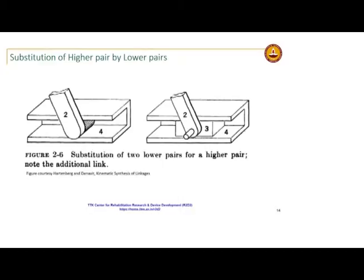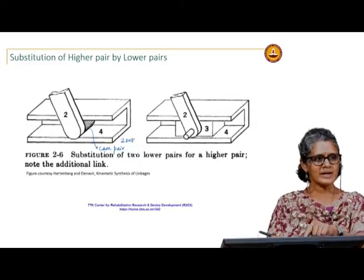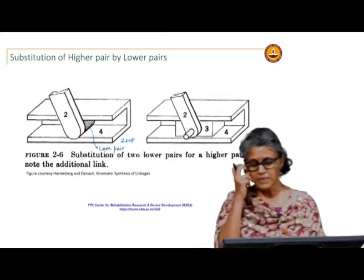In this case, link 2 has a pin that rolls and slides in a slot — the kinematic pair between link 2 and link 4 is a higher pair, specifically a cam pair, which is 2 degrees of freedom. Any time there is rolling and sliding you call it a cam pair. Looking at the motion of 2 relative to 4, it has 2 degrees of freedom.